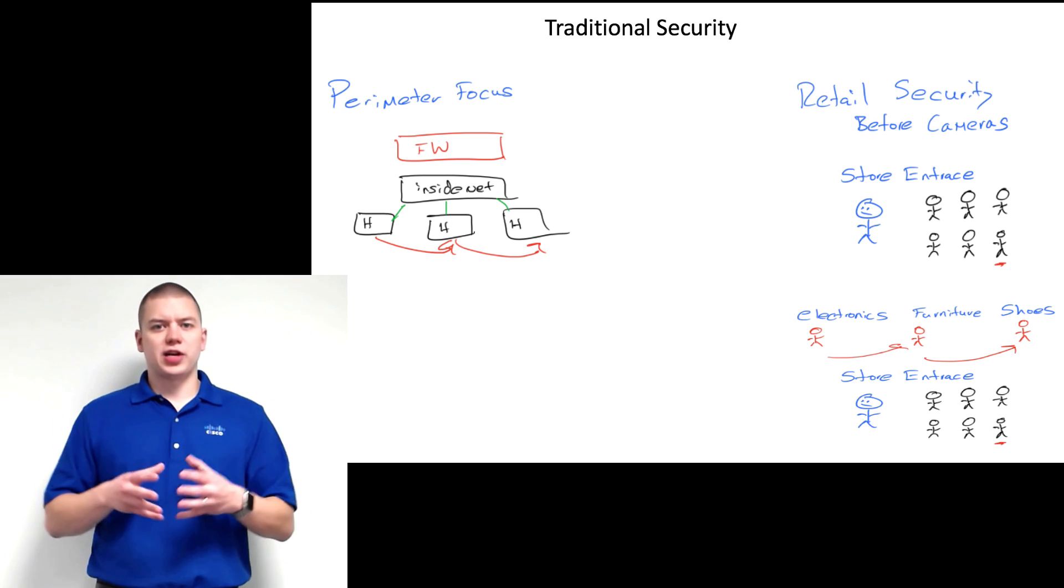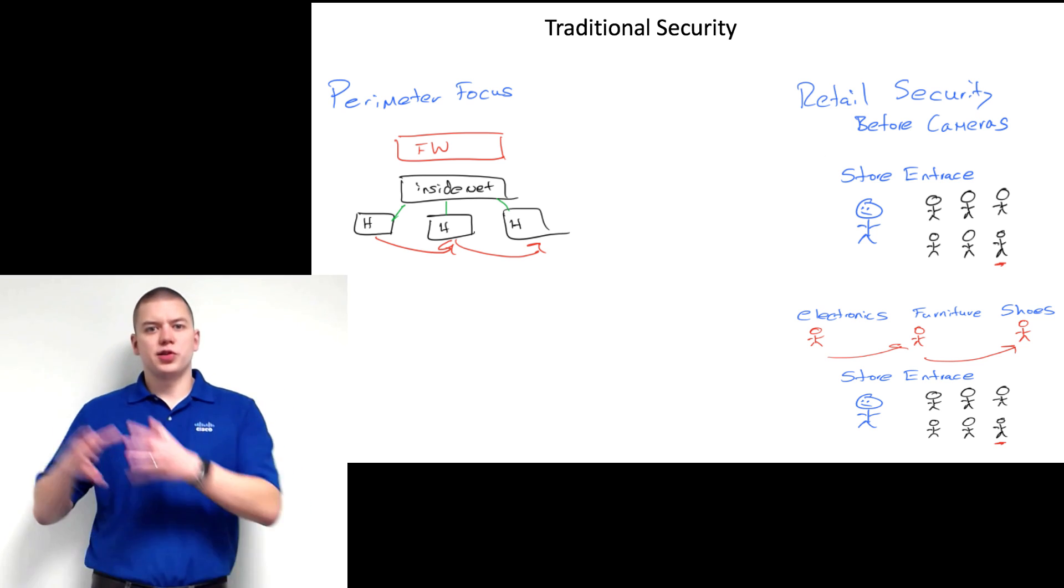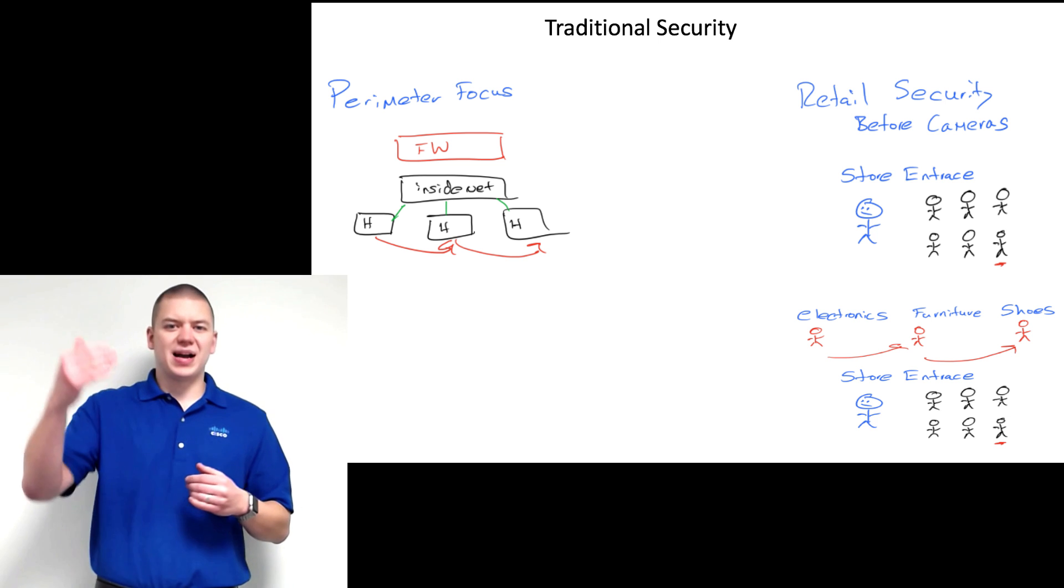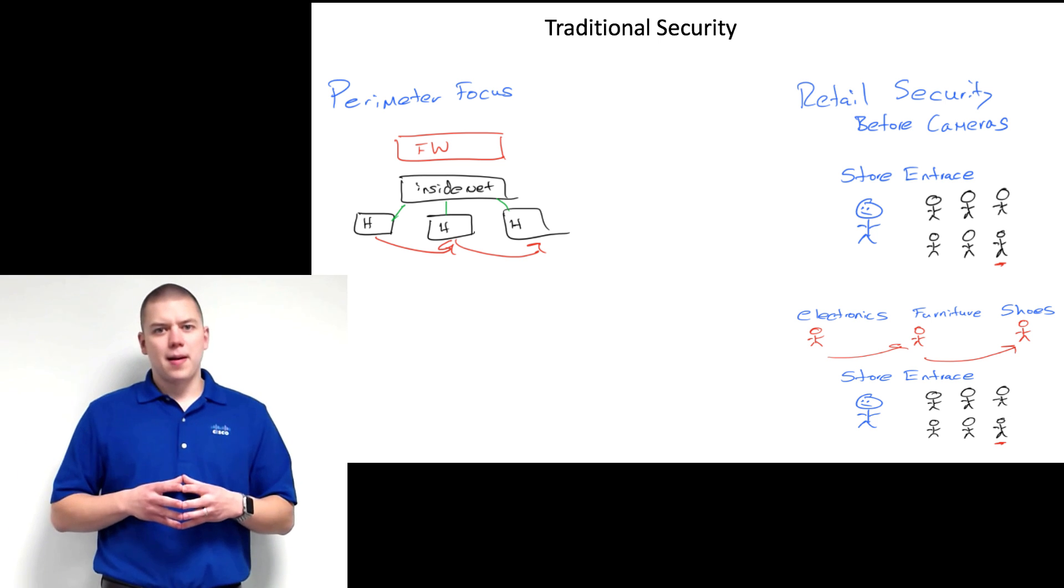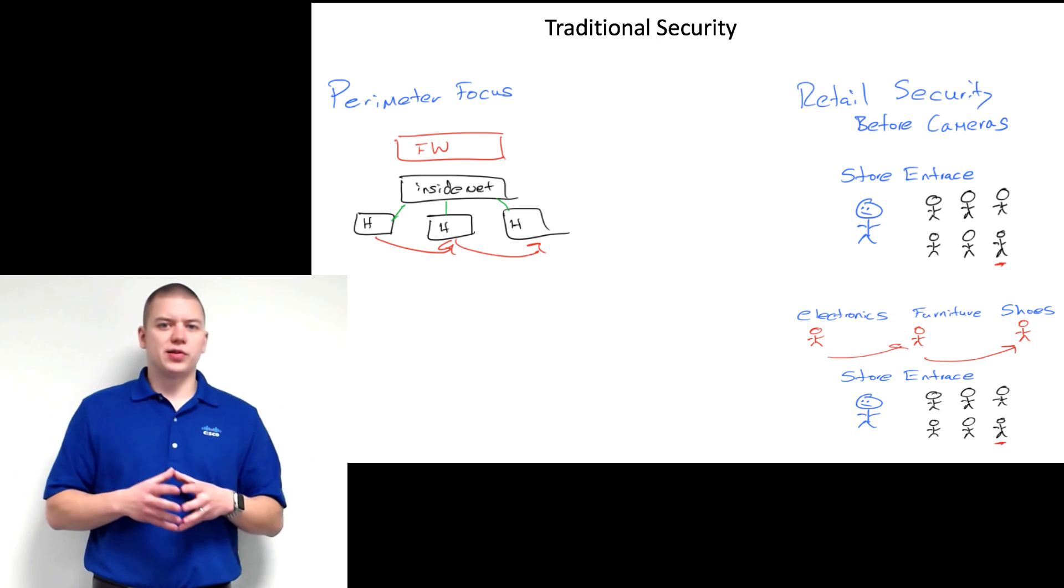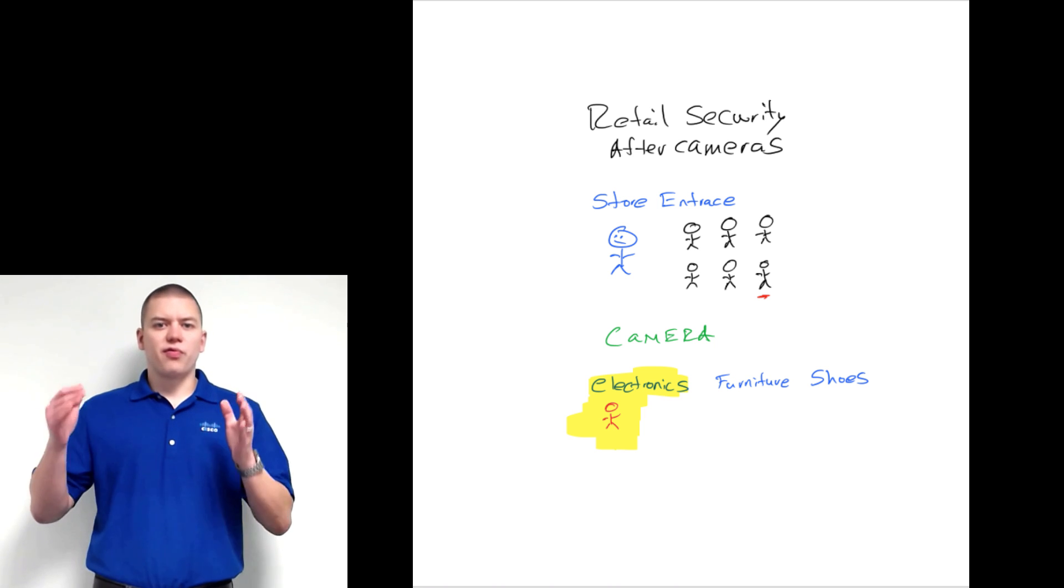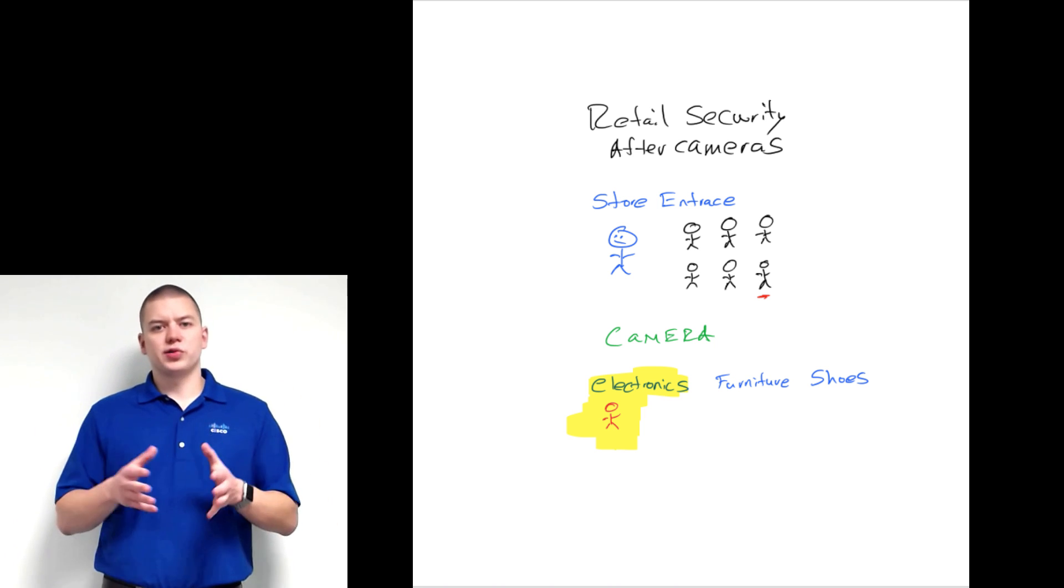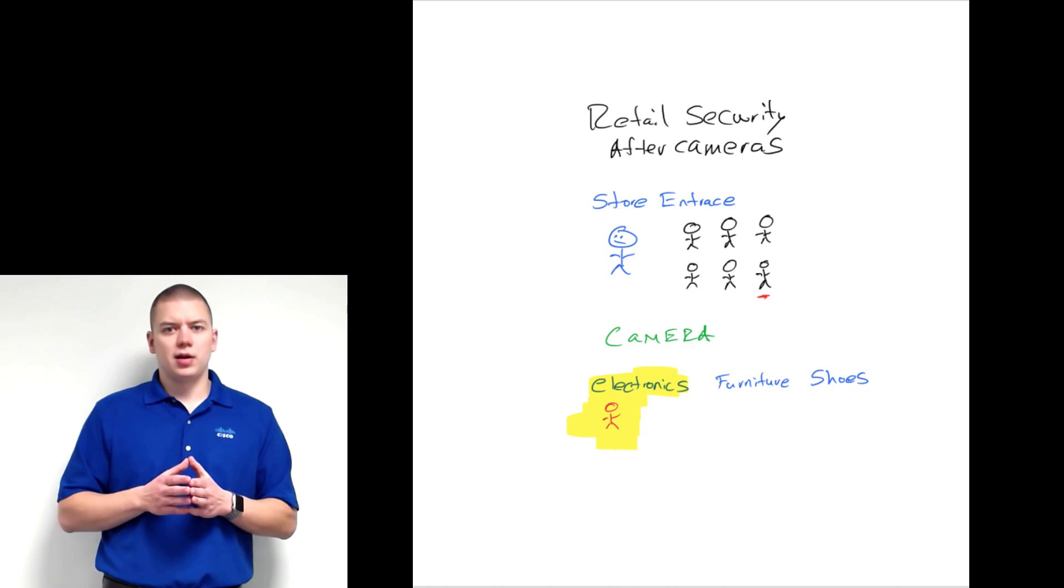I like to equate the challenges we have today to those of retailers before cameras. You had a security guard at the door trying to pick out bad guys going in and out, but had no clue what's going on inside the store. To fix this, retailers rolled out cameras inside the store to see in real time if someone is in danger or something is being stolen, and then act on that in real time.